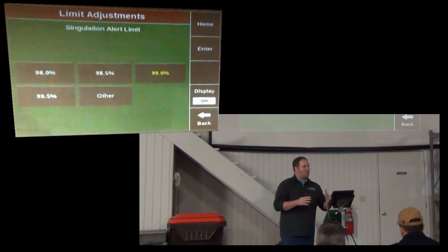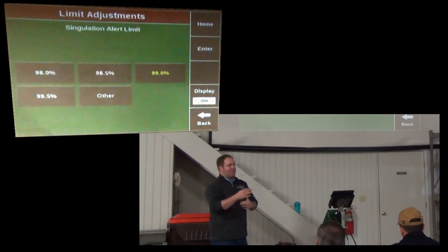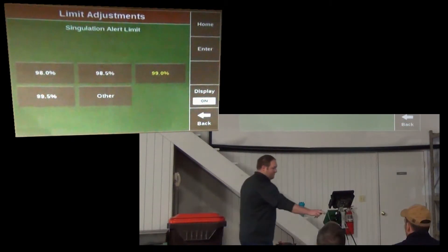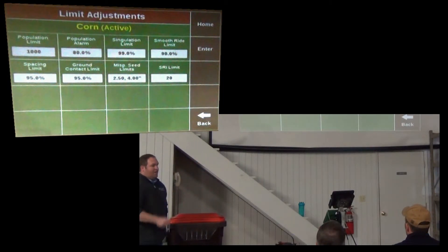So if my singulation that I expect out of my meters is 97.5%, I might touch other and set my singulation limit to 97. Because then if I drop off half a percent, I get a yellow box. So this should be set right below the singulation you can expect. So if you have your meters calibrated, you know, have an idea of what your singulation will be, and you can use that to set this. In these other rows, there's a smooth ride limit. 90% is probably a good spot to have that. It's going to vary field to field depending on your tillage conditions. Spacing limit, 95 is a good spot to have that.